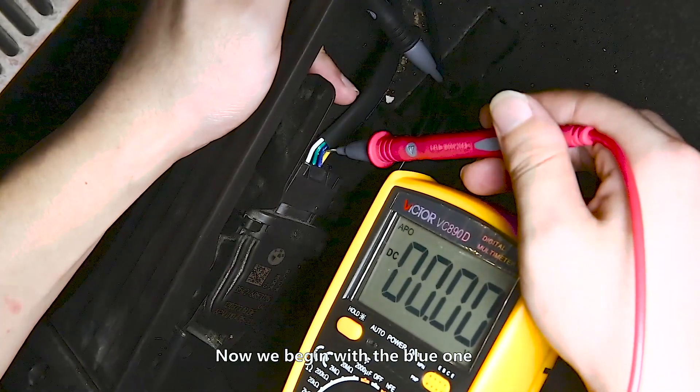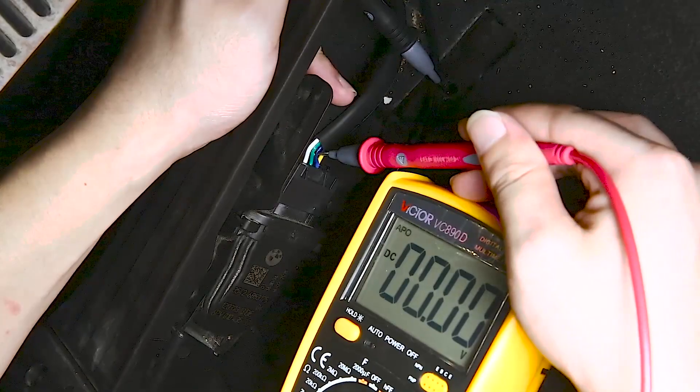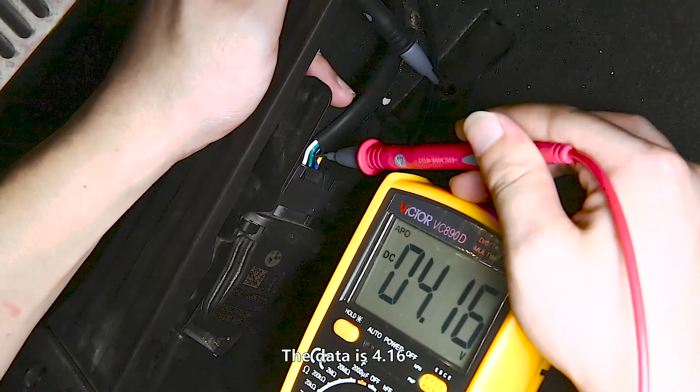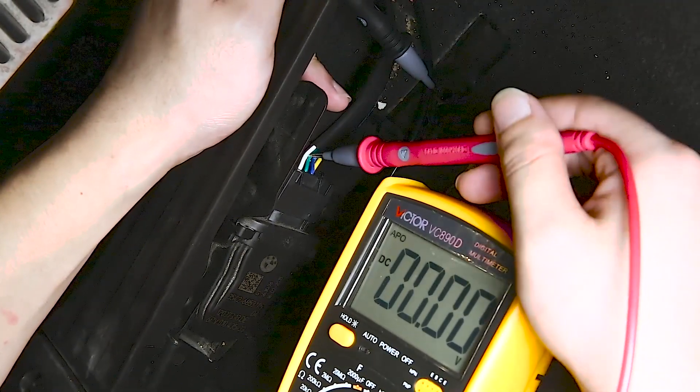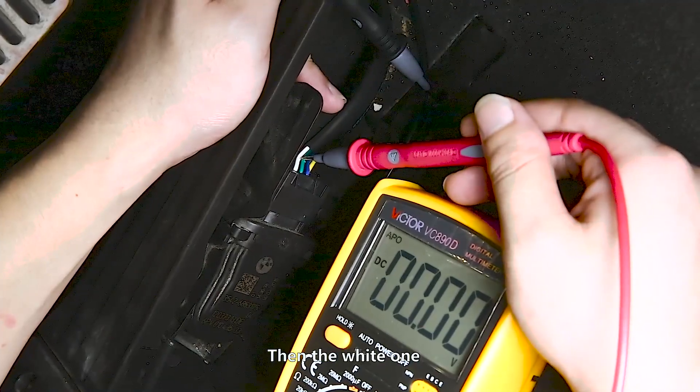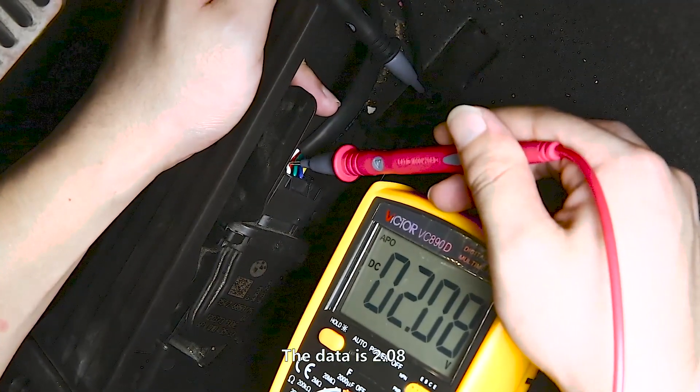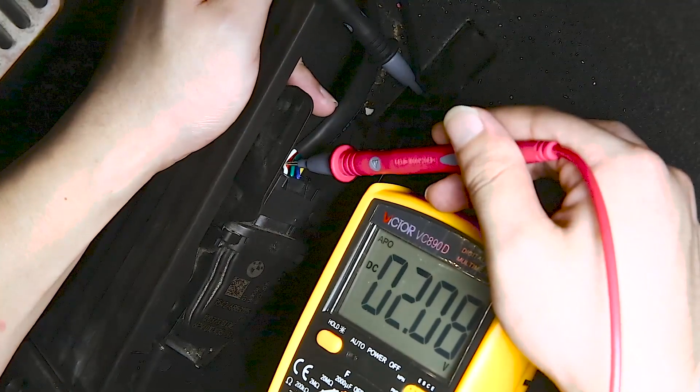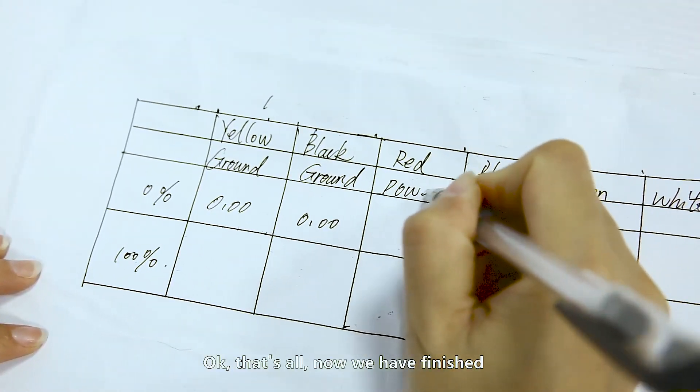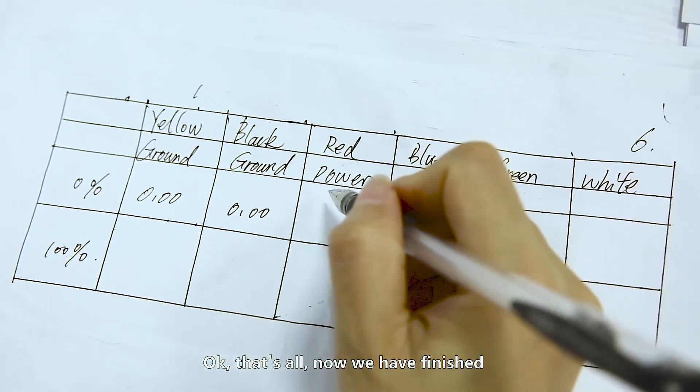Now we begin with the blue one. The data is 4.16. Then the white one. The data is 2.08. That's all. Now we have finished.